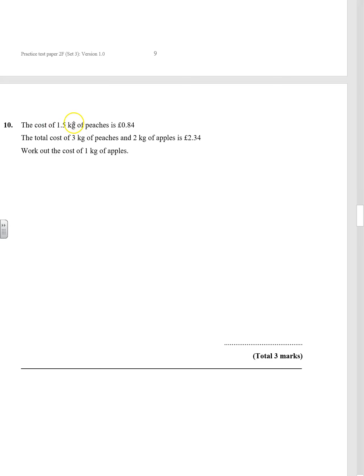Question 10. The cost of one and a half kilos of peaches is 84p. The total cost of three kilos of peaches and two kilos of apples is £2.34. Work out the cost of one kilo of apples.